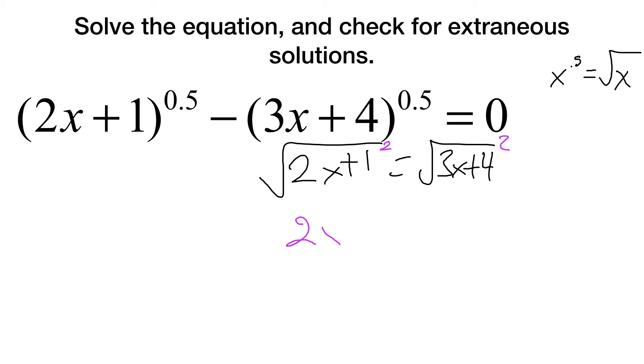At which point, square both sides. Square, square. 2x plus 1 equals 3x plus 4. Subtract 2x from each side. 1 equals x plus 4. Subtract 4. Subtract 4. Negative 3 is the same thing as x. So then I just plug that in. So let's see. Negative 6 plus 1 is negative 5 to the point 5 minus negative 3 times 3 is negative 9 plus 4 is also negative 5 to the point 5. And that equals 0.